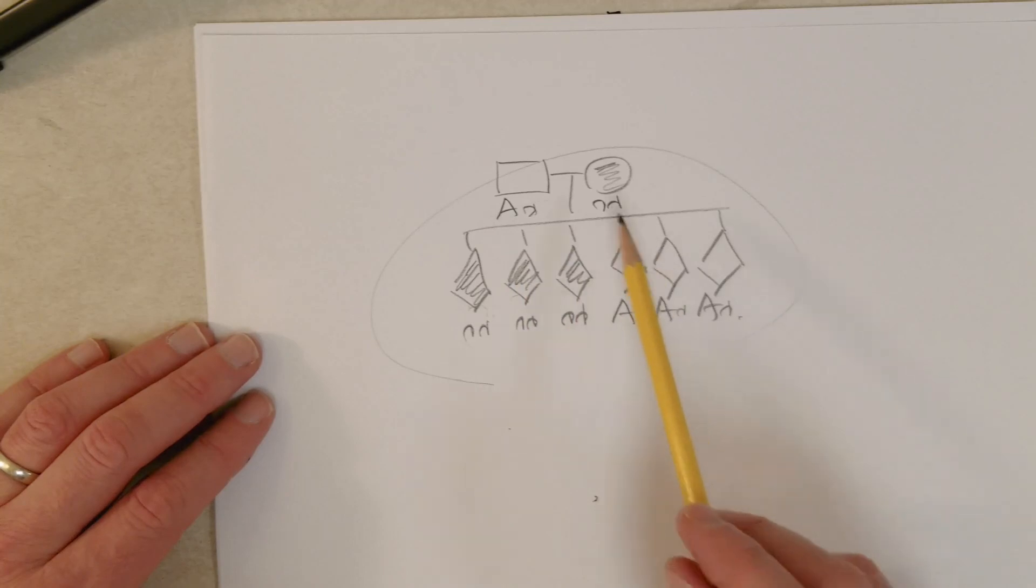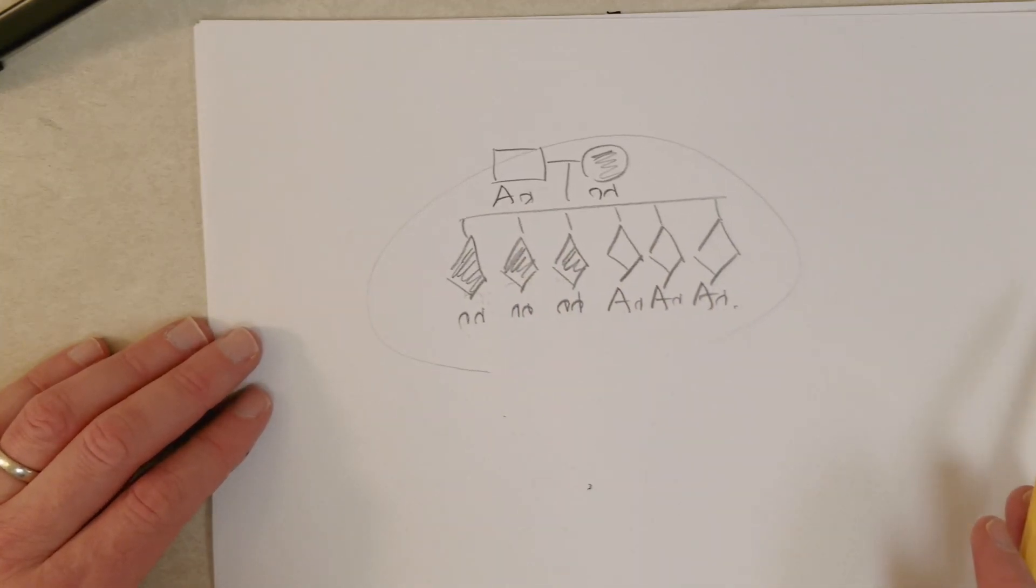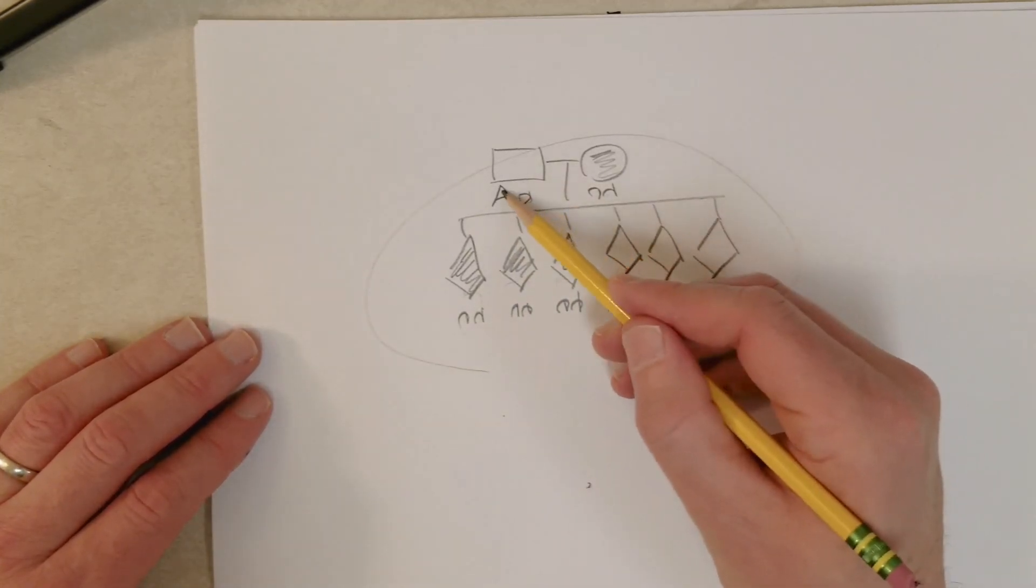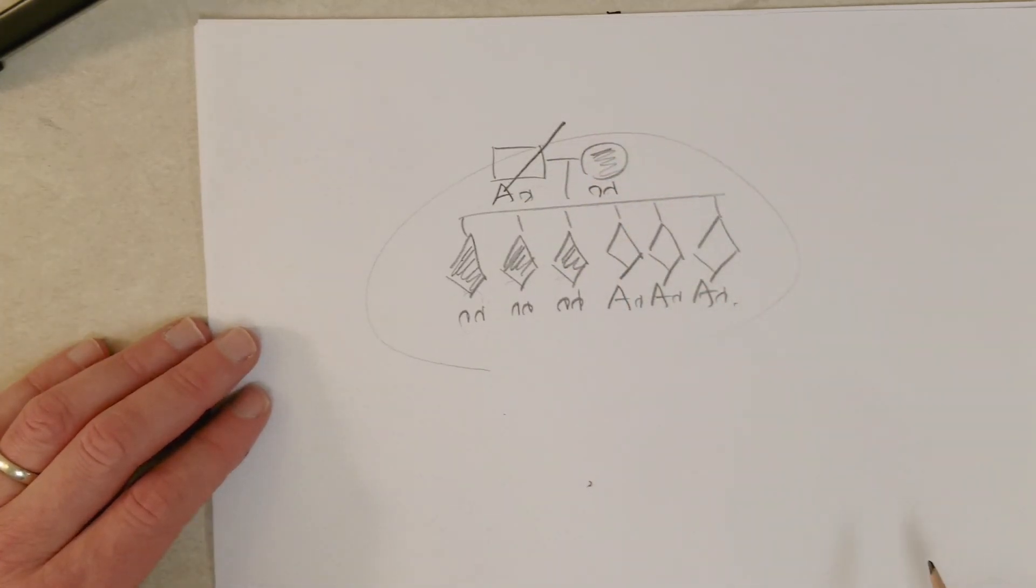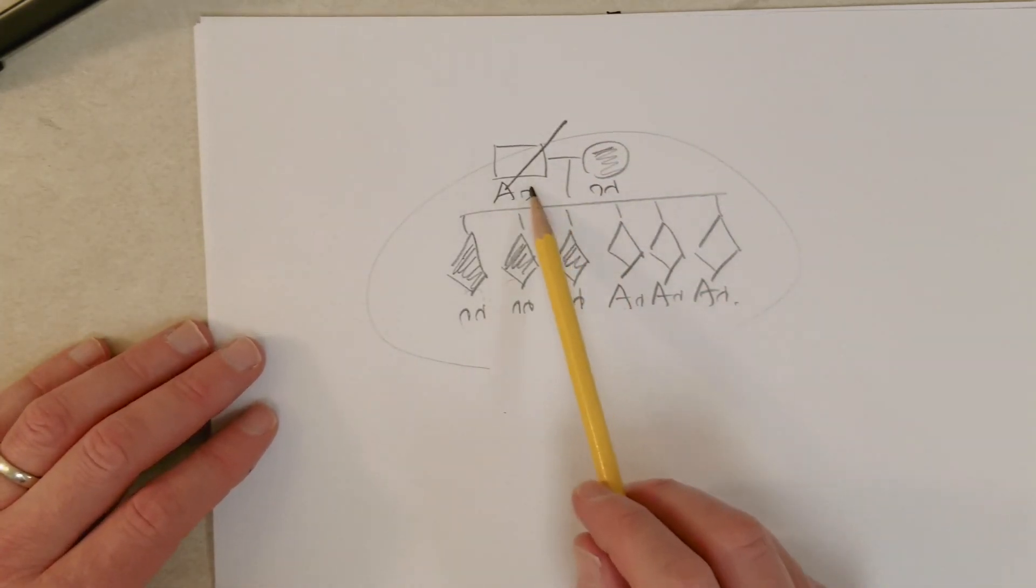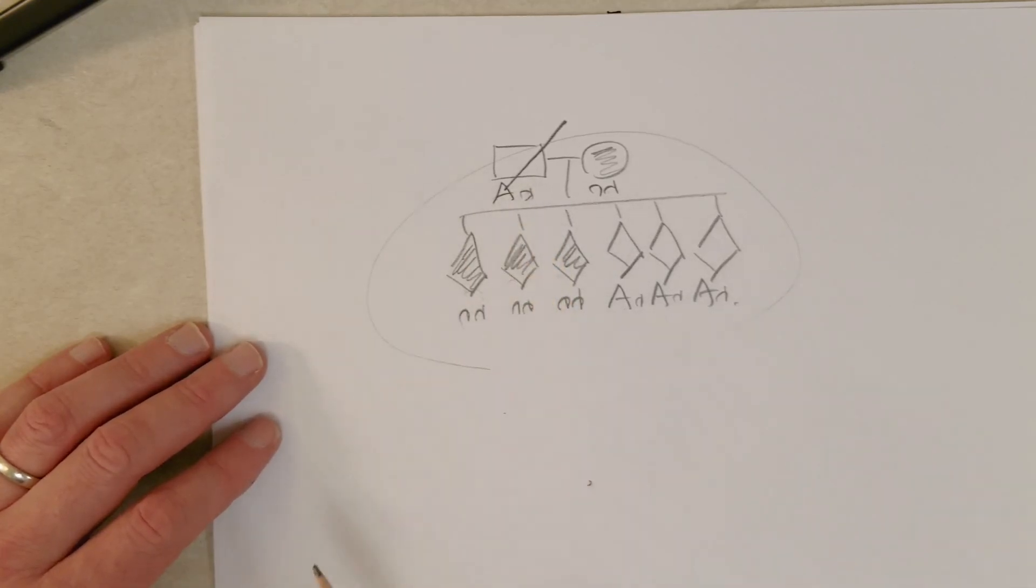And by going through the problems here, I think you can see how these pedigrees work. One thing I'll touch on is that if you see a line through an individual, that means that at the time the pedigree was put together, that individual was deceased.